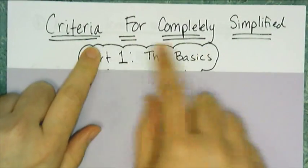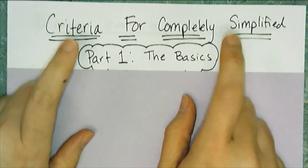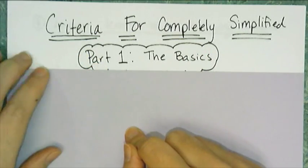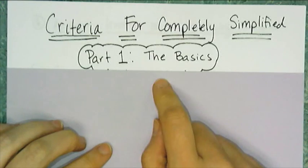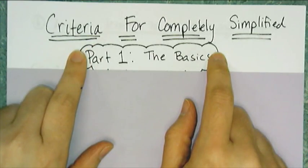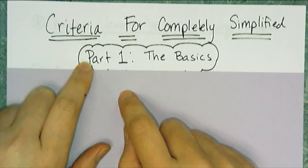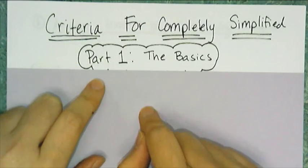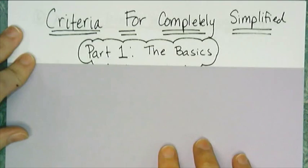When I say criteria for completely simplified, I mean how your answers need to look when you're done and you box it off. I'm not going to talk about the properties to achieve completely simplified answers — that's in another video. This is just what you have to achieve. These are the things posted on my wall, and I gave you a handout.